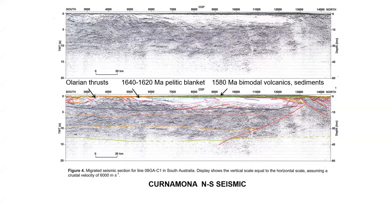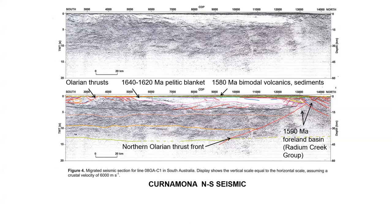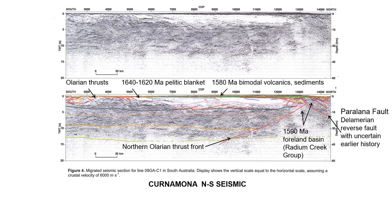An interpretation done jointly by Geoscience Australia and the South Australian Survey shows a major thrust at the northern end of the line, which I would interpret as the northern Olarian thrust front. The rocks exposed in the Mount Painter inlier in the northwest part of the Curnamona Province are sediments I think were deposited in a foreland basin synchronous with the Olarian Orogeny at about 1590 million years. We also see the Curnamona vault, which is a Delamerian reverse fault with a probably earlier history, though its details remain uncertain.